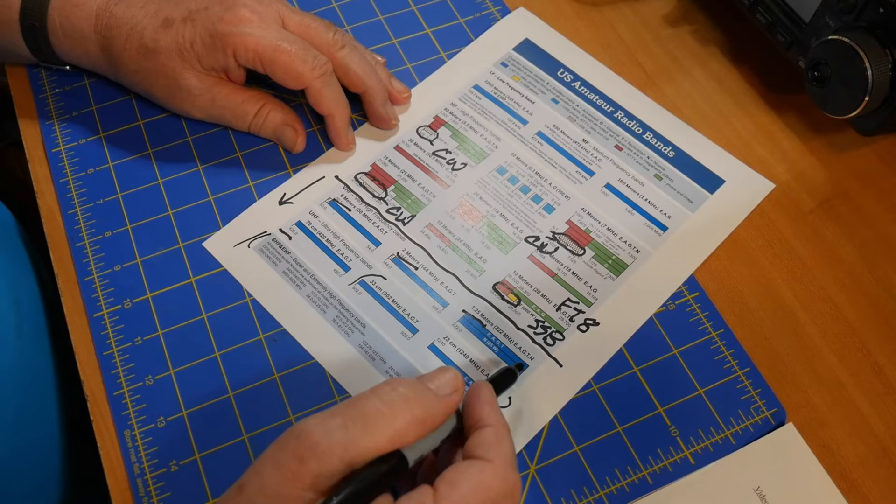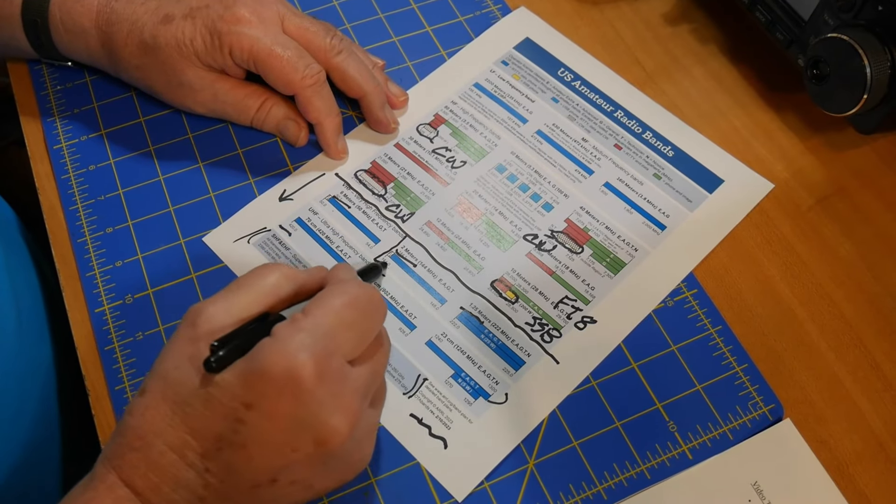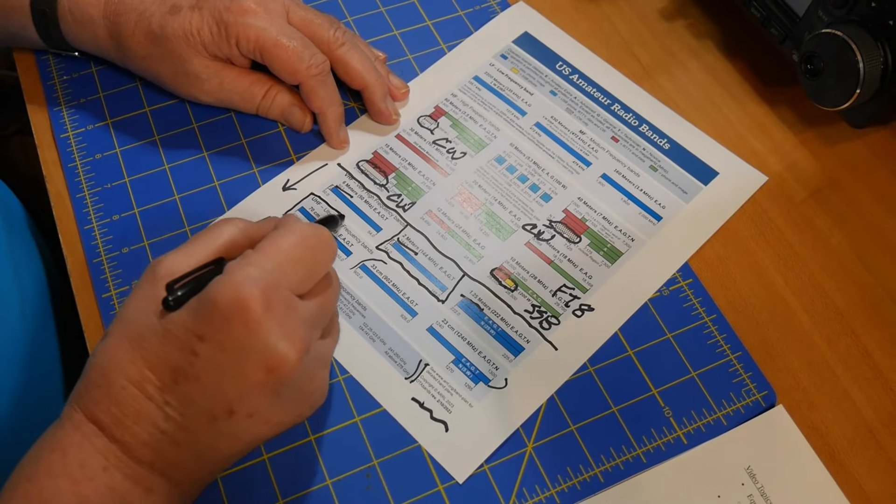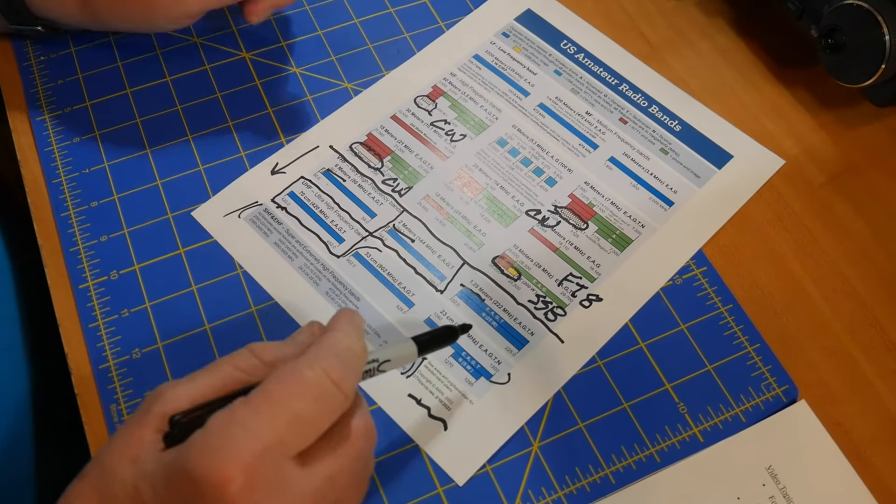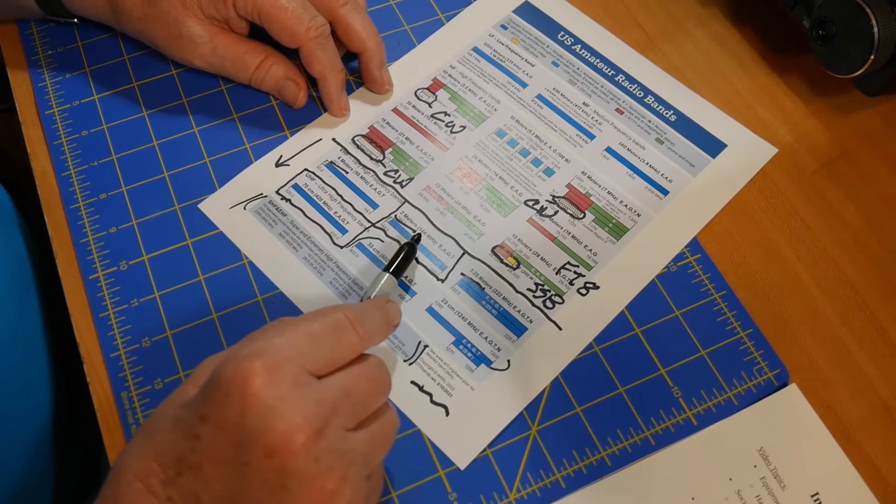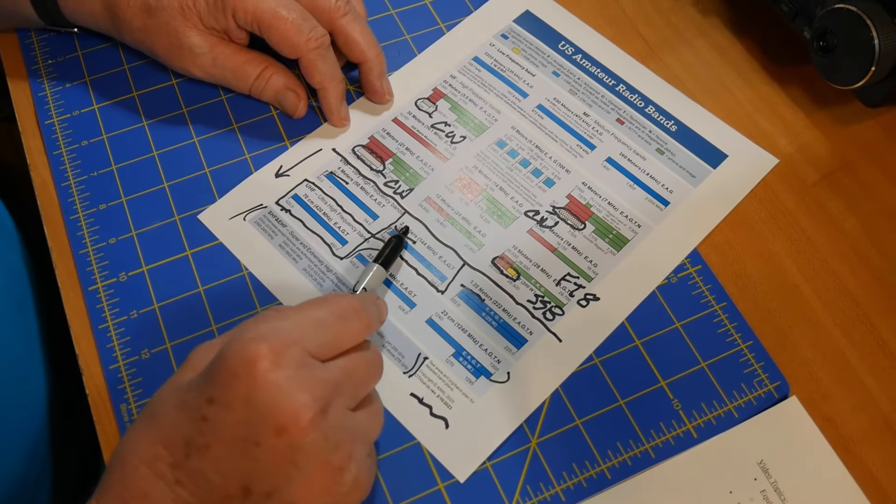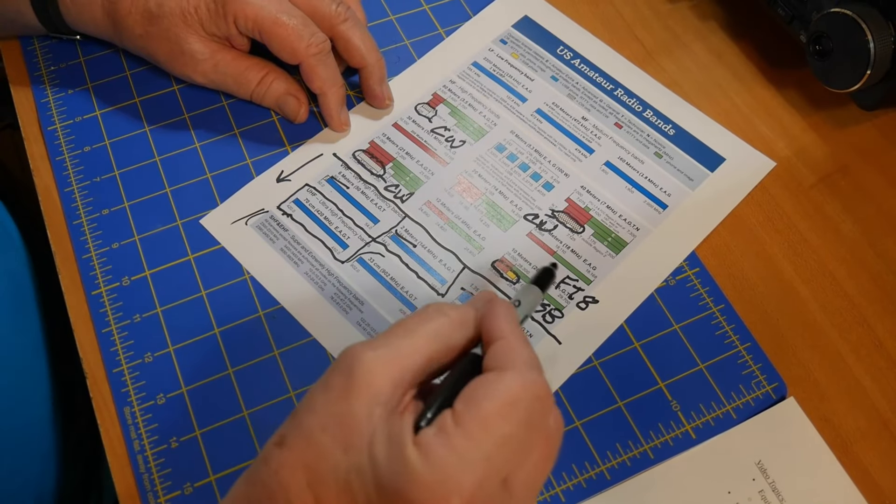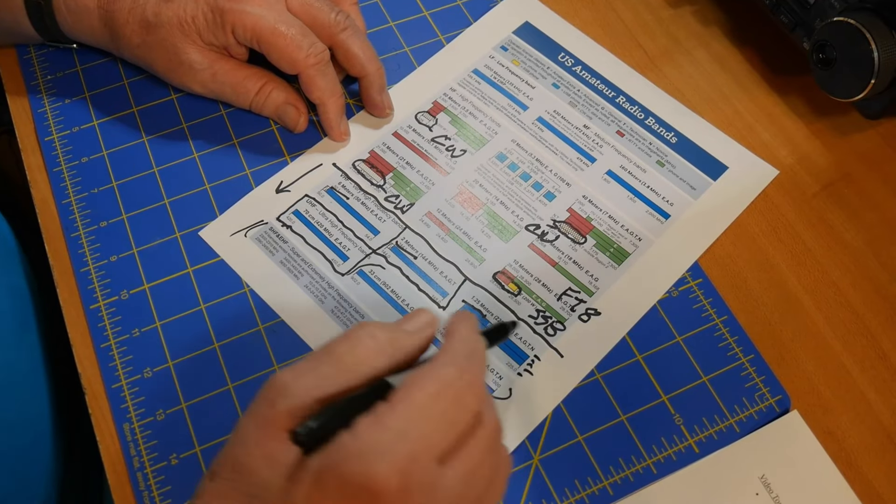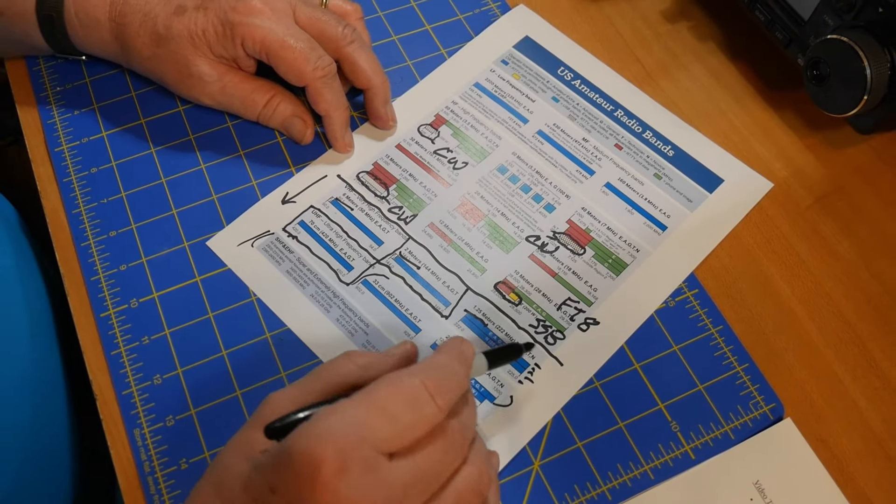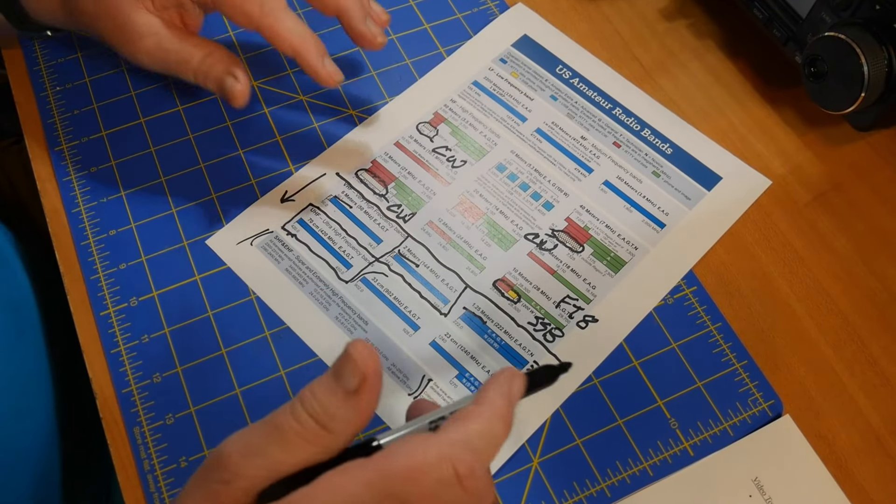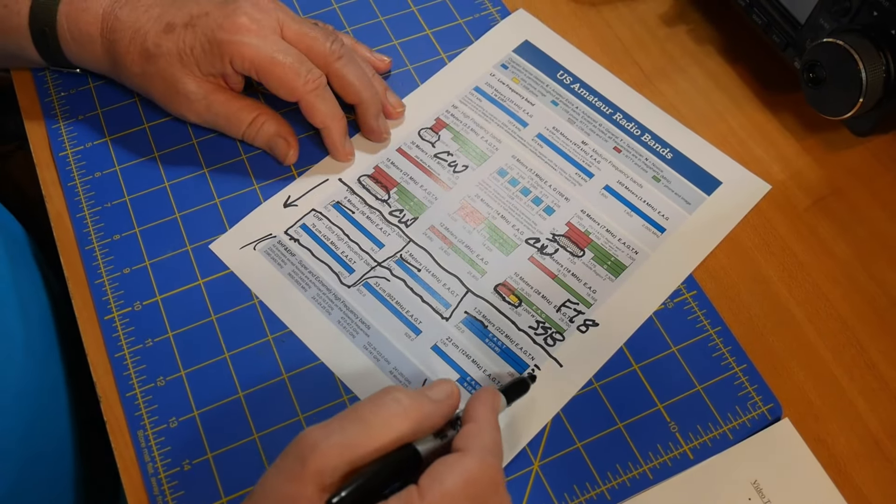Now, the two bands that get the most activity up here are 2 meters and 70 centimeters. So if you get a dual band handheld or a dual band radio, it usually means this and this right here. There's historical reasons why this is just coming back into use. I won't go into those. They're strange. It's an example of mass psychology causing people to go off that band.